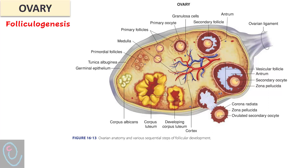The smallest follicles in the ovary are primordial follicles, formed of a primary oocyte surrounded by a single layer of flattened granulosa cells. The primary oocyte is arrested in the first meiotic division. Primordial follicles grow to form primary follicles, where the oocyte is slightly larger and the flat granulosa cells become cuboidal — this step is FSH-independent. With rising FSH at the beginning of the cycle, the primary follicle grows further: the oocyte enlarges, granulosa cell layers increase, and a zona pellucida forms around the primary oocyte.